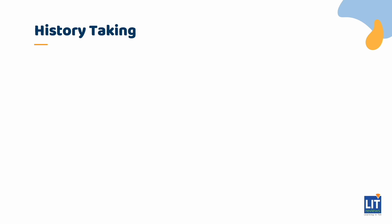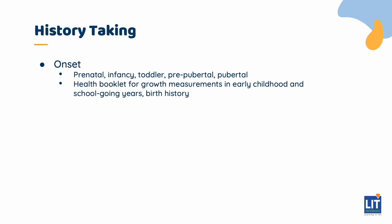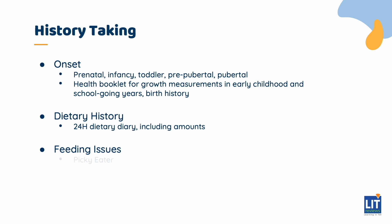When taking the history, you need to ask about the onset of the concerns about the child's growth. In other words, has this child always been small since birth and possibly even in utero? Or has something happened more recently to affect the child's growth at a later stage? When taking a dietary history, it is more effective to take a 24-hour food diary than to ask the parent if the child eats well subjectively. Bear in mind that feeding issues are extremely common in younger children and may be contributing to the problem.